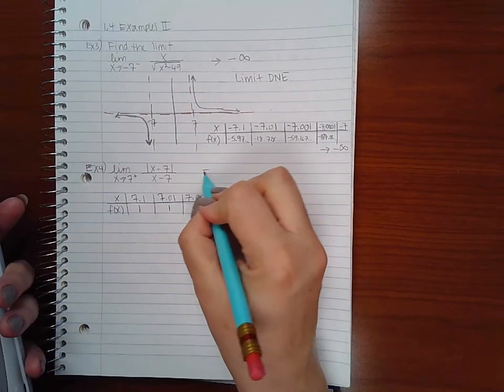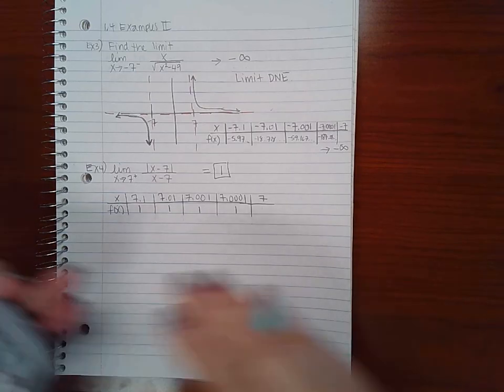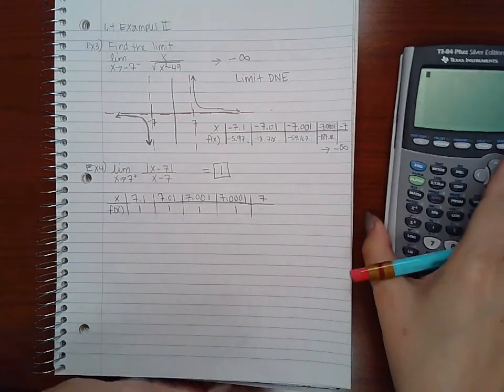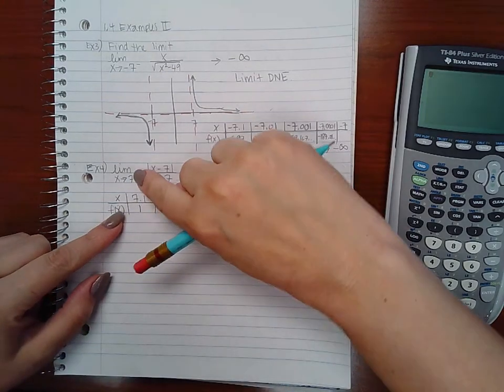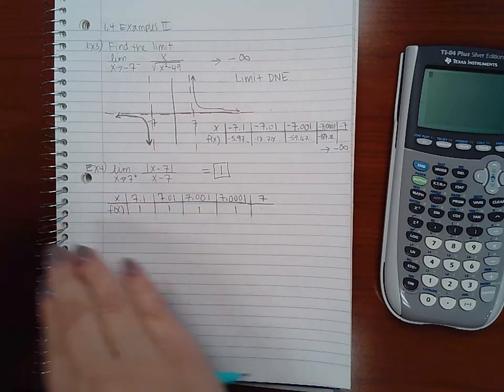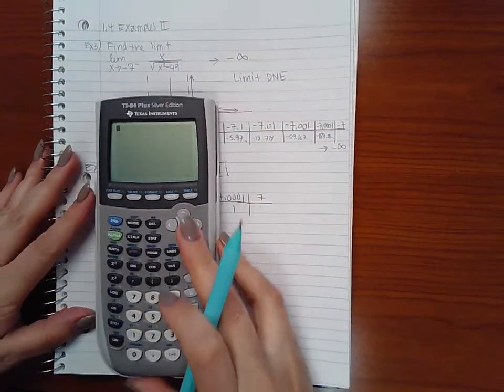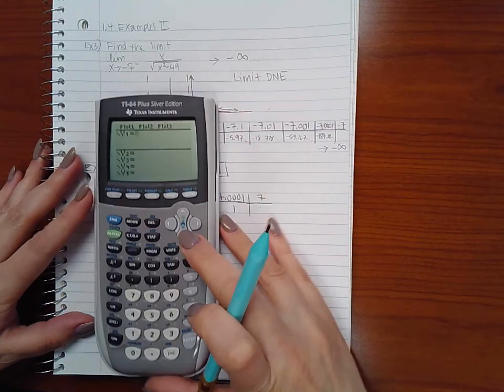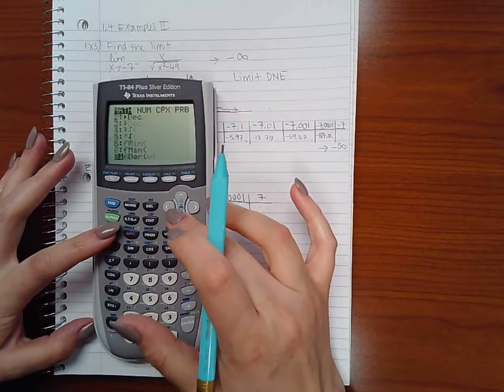So the limit here will actually equal 1. Now that's the one-sided limit. If I tried to do the other side it would always be negative, and so the actual limit without the plus or minus wouldn't exist. But when you're just doing a one-sided limit you just want to see what it's doing on one side only.